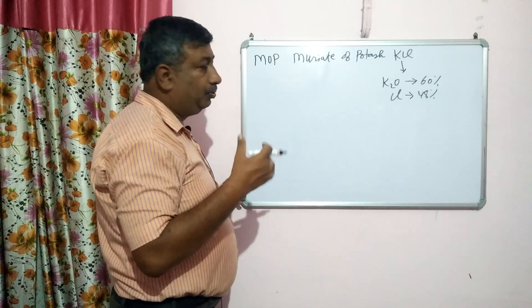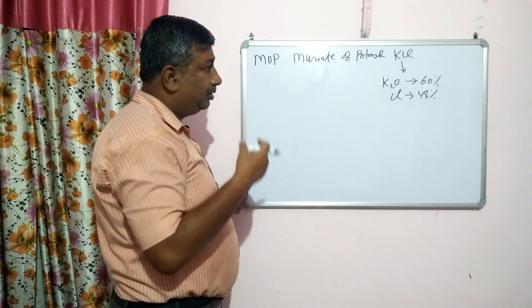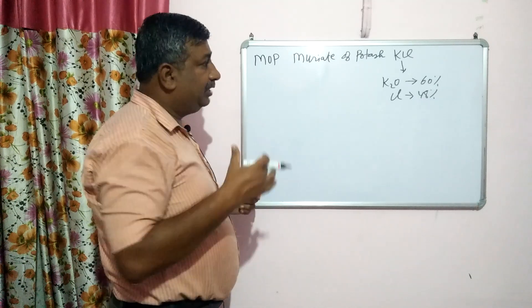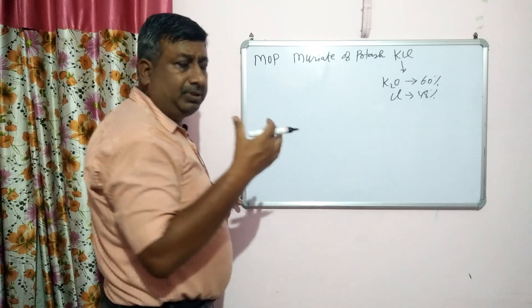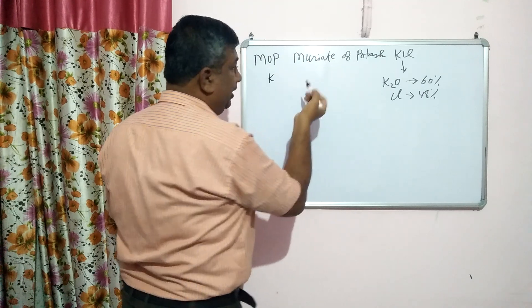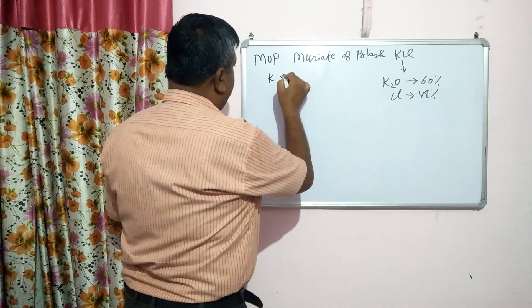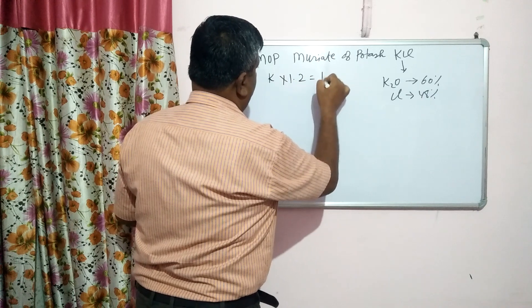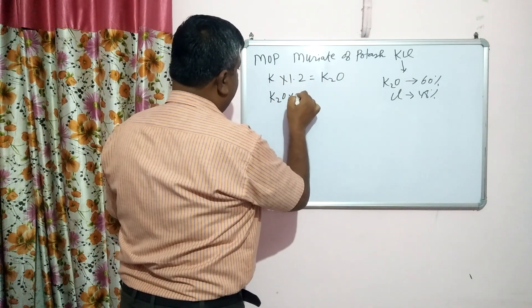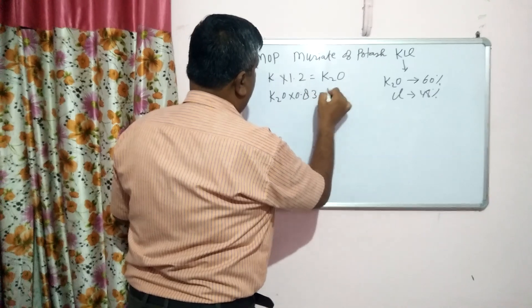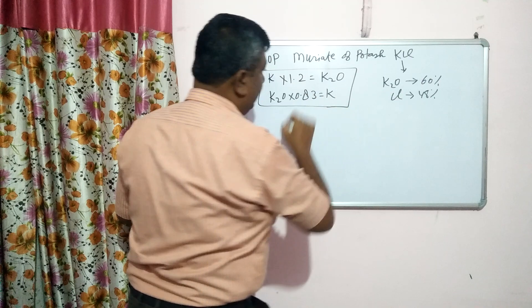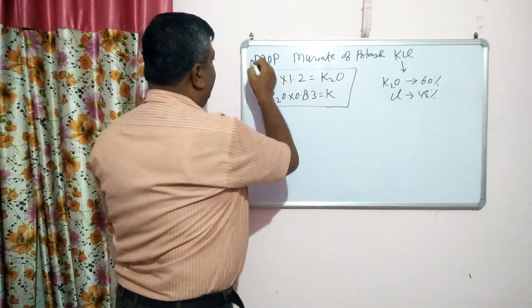Potassium fertilizers are expressed in oxide form — that is K2O form — not in elemental form. Elemental form is used in plant biology, but when we talk about fertilizer it is oxide form. The conversion formula is: K2O multiplied by 0.83 equals K. This formula is generally asked in examinations.